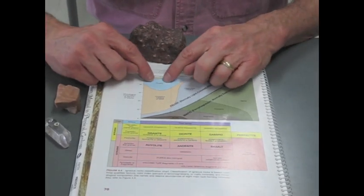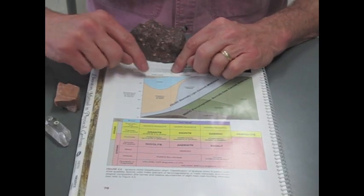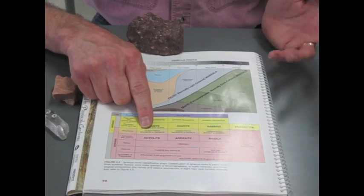So based on those two minerals, quartz and potassium feldspar, this is actually a light-colored rock, and it would be porphyritic in texture, and so we'd call it a porphyritic rhyolite.